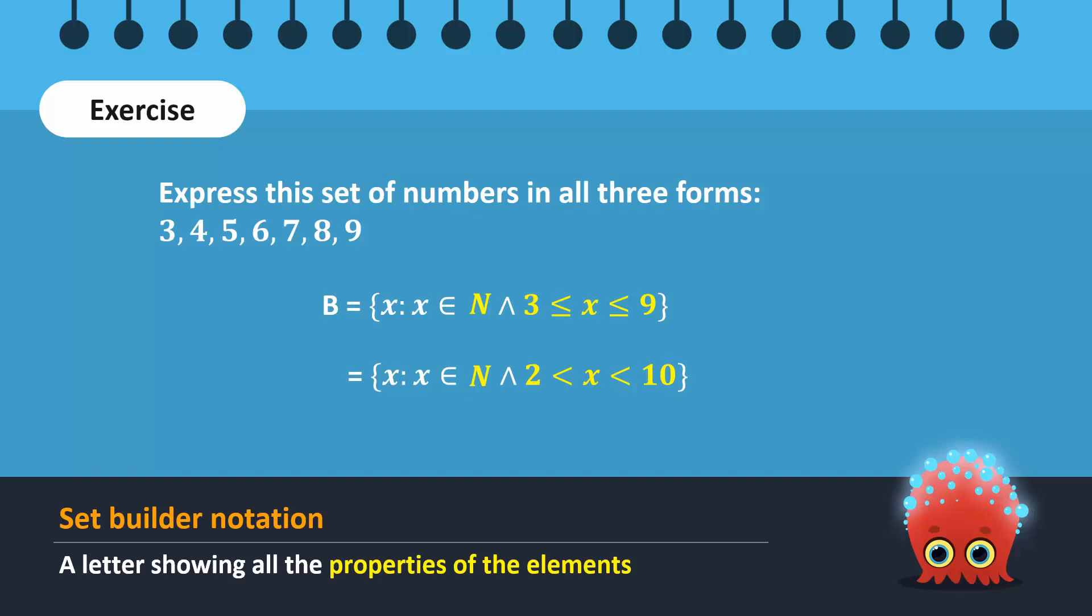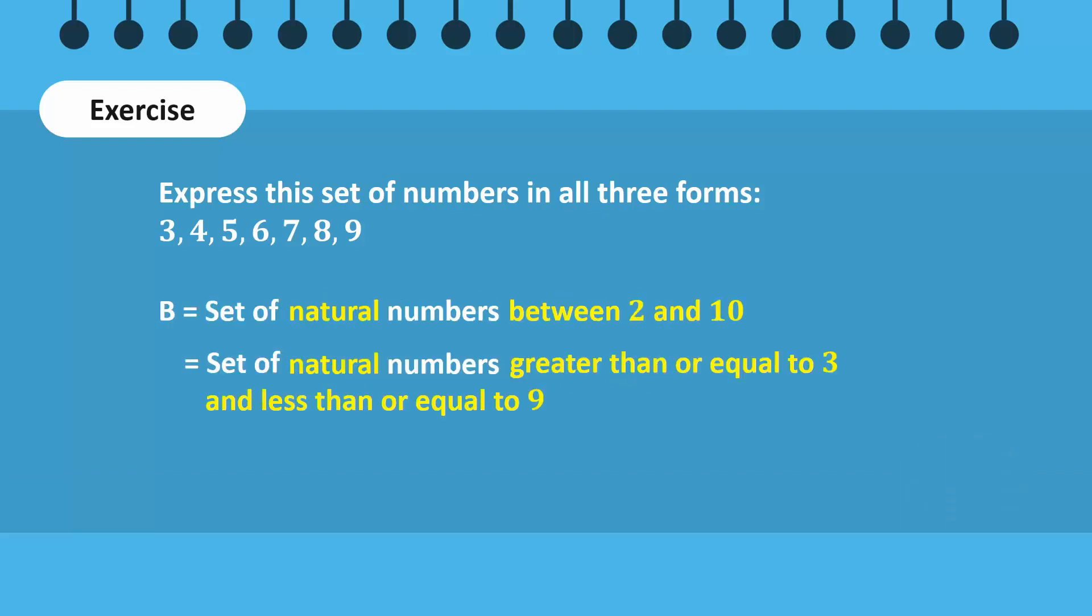Besides natural numbers, the given numbers also belong to the set of whole numbers and the set of integers. Therefore, in the set builder notation, we can replace N with either W or Z. All three notations are correct. Similarly, in the descriptive form, we can replace natural numbers with whole numbers or integers.